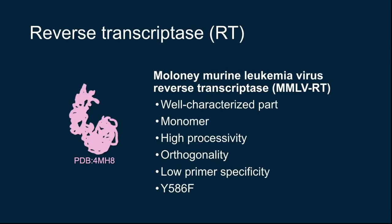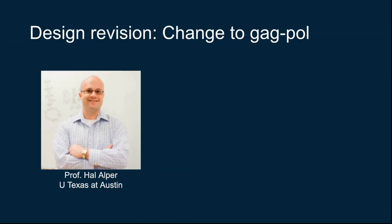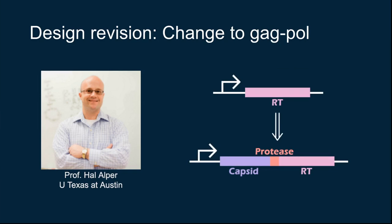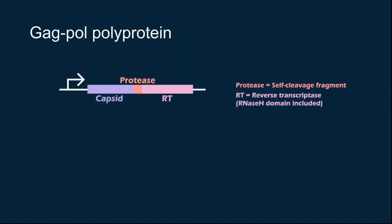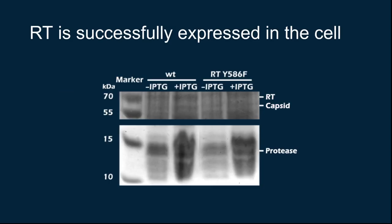We contacted Professor Elowitz with our design. He mentioned to us the necessity of the capsid protein for promoting the reverse transcription efficiency. On his guidance, the design is revised from only expressing reverse transcriptase to expressing the gag-pol polyprotein. The gag-pol can be split into three proteins, the viral capsid, protease, and the reverse transcriptase. The protease would process and splice the polyprotein, allowing the capsid and RT to function on their own. The RT expression is then confirmed by SDS-PAGE. Induced by IPTG, the gag-pol polyprotein would be expressed and split into three fragments within the cell.